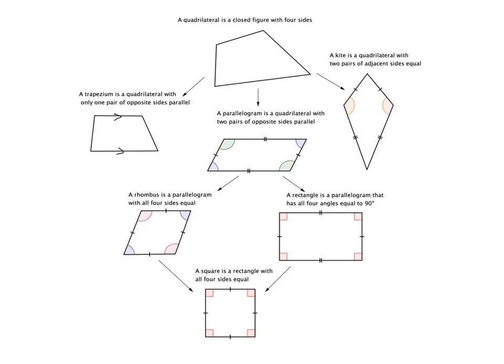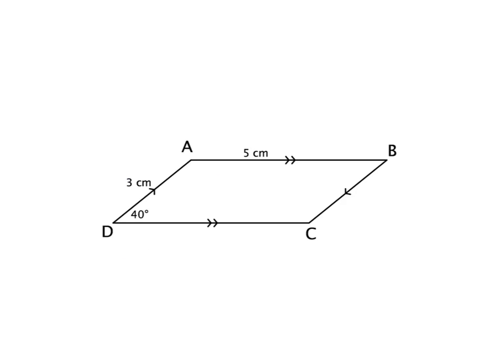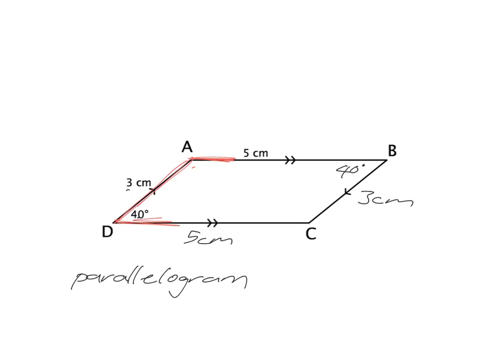If given a problem asking us to fill in all missing sides and angles, we first need to identify what kind of quadrilateral we're dealing with. Here, we have two pairs of opposite sides parallel, so we know it's a parallelogram. Using the property that opposite sides are equal: if one side is 3, the opposite side is 3; if another is 5, the opposite is 5. Opposite angles are equal, so if one angle is 40°, the opposite angle is also 40°.